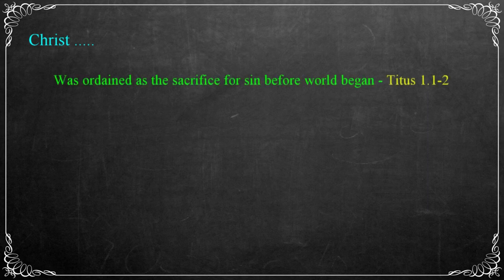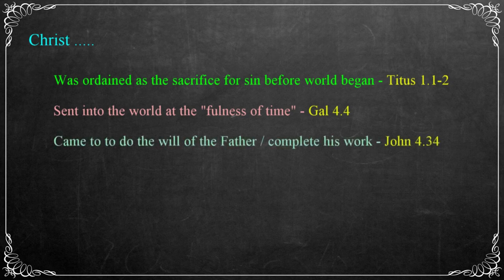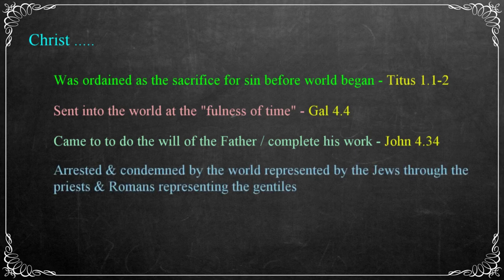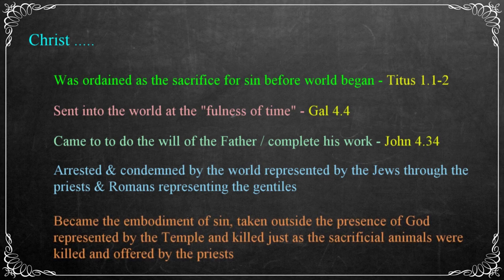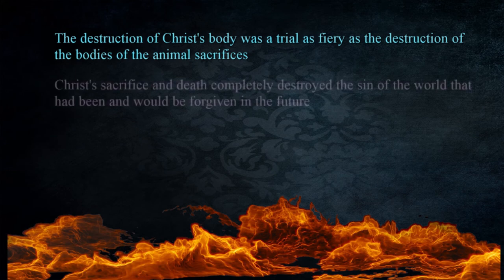The bodies of the animals represented the embodiment of sin that had to be destroyed — destruction which came in the form of fire, outside and away from the presence of God in his sanctuary. Christ was ordained as the sacrifice for sin before the world began (Titus 1:1–2), sent into the world at the fullness of time (Galatians 4:4), and was on the earth to do the will of the Father and complete his work (John 4:34). When Christ was arrested and condemned, he did so at the hands of the world — represented by the Jews through the priests and the Gentile world through the Romans.